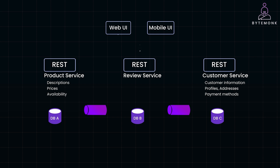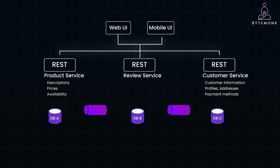If the client directly interacts with the services, it would need to call the product service to fetch the product details, then call the customer service to retrieve customer-specific information such as purchase history or personalized recommendations, and finally call the review service to gather product reviews. This approach introduces a few key challenges.